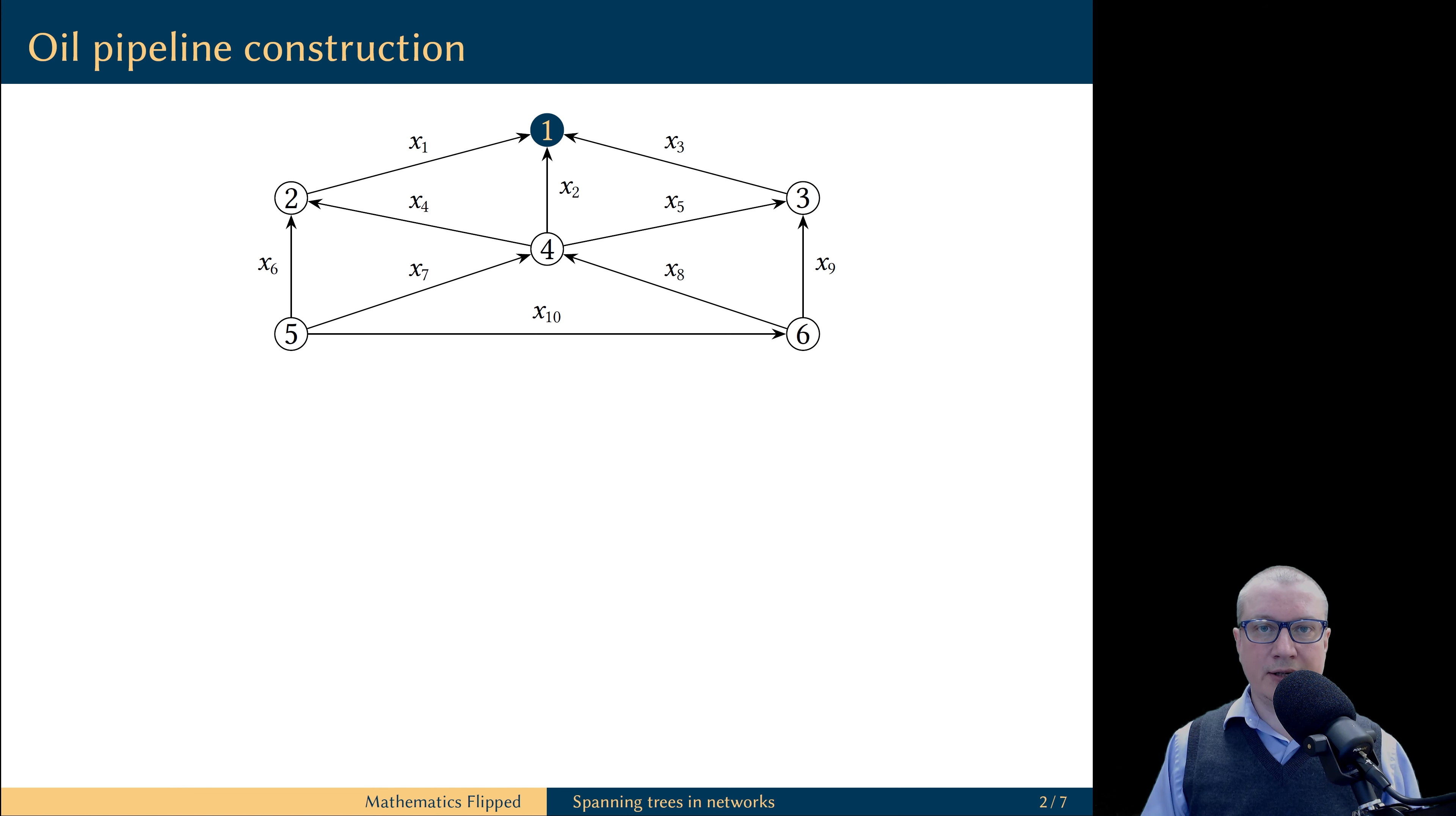Let's say these are the pipelines we can build. The arrows indicate the direction of the oil flow. Let's analyze this problem mathematically. For example, we can record the flow at each node of this network.